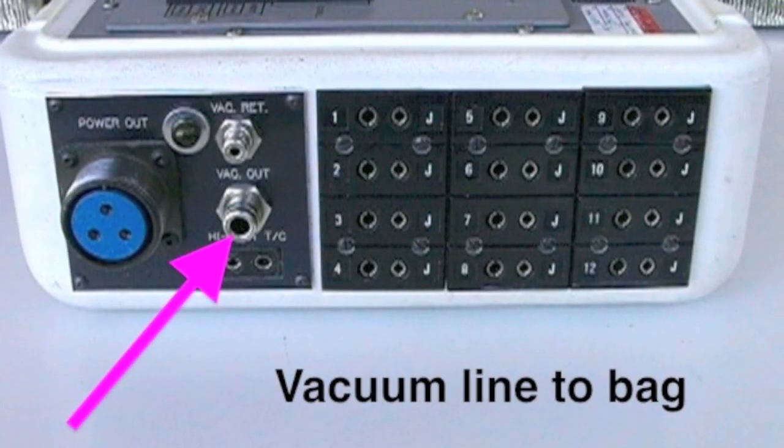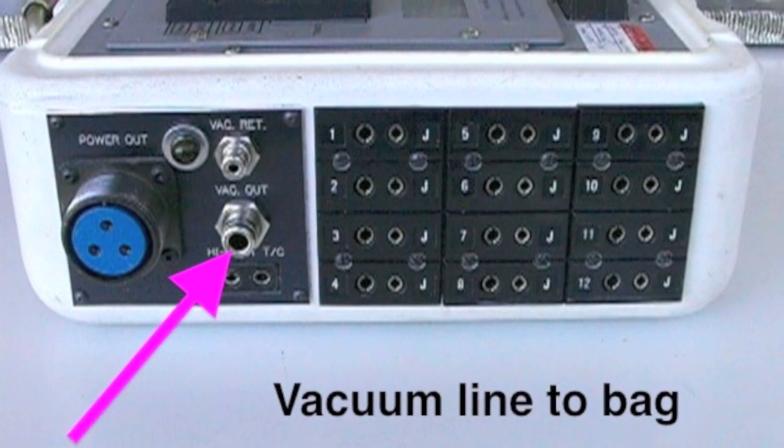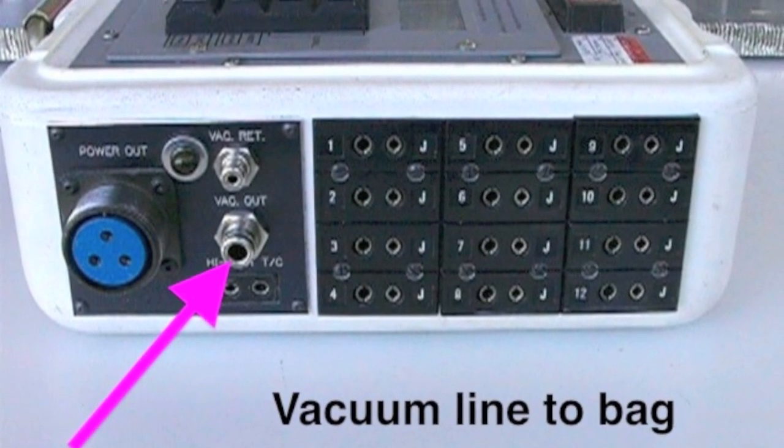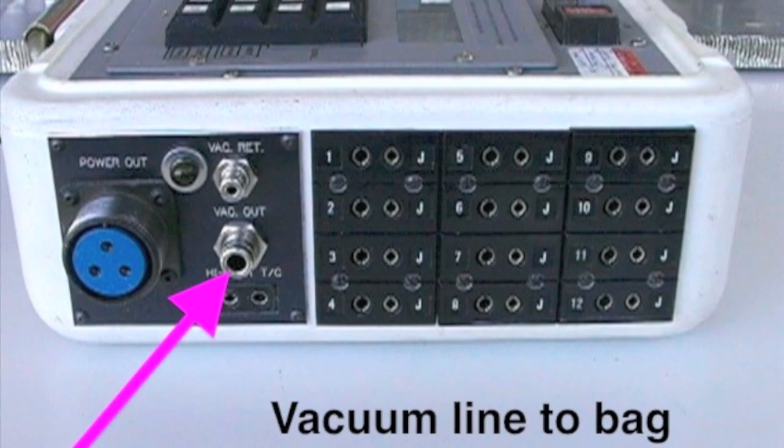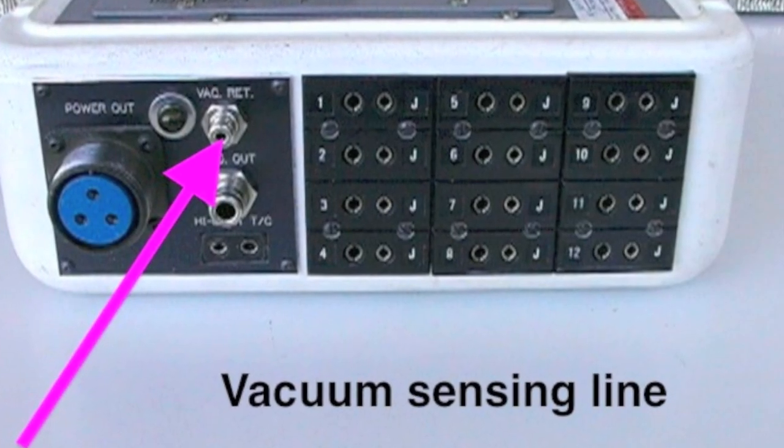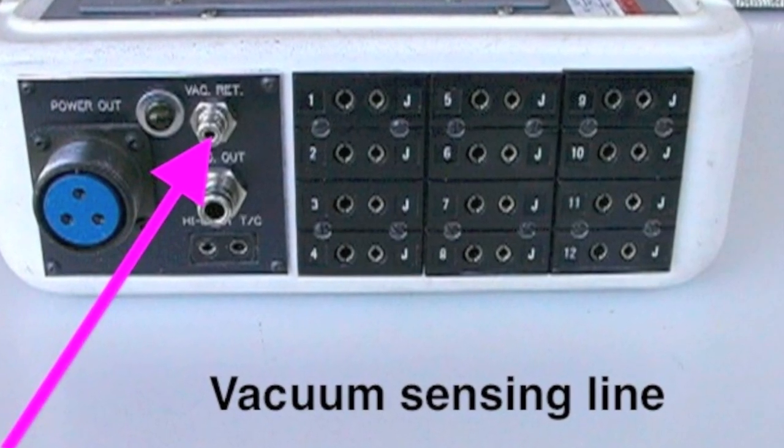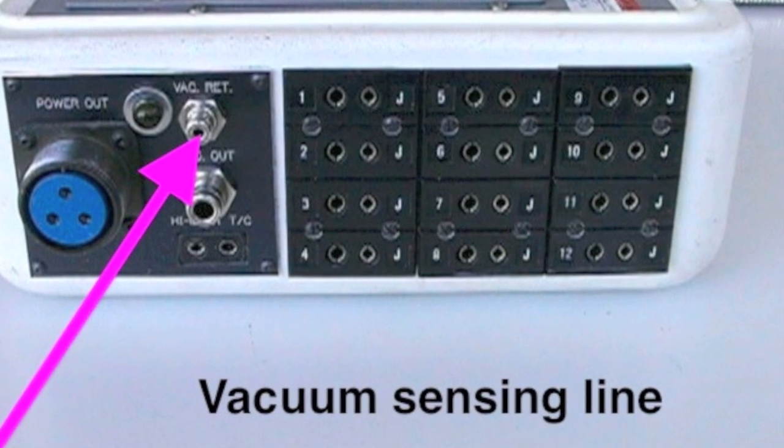Insert the large plastic vacuum tube into this fitting and insert the other end into the breather layer. The vacuum sense port is used to monitor vacuum pressures in the bag. Connect the breather layer to this port.